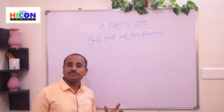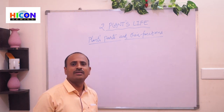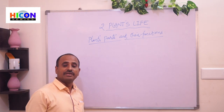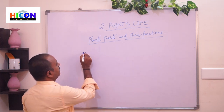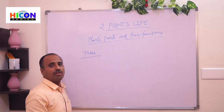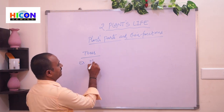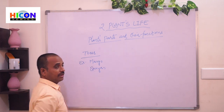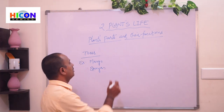Children, we have observed different types of plants in our surroundings. Some plants are very big, some plants are small, and some plants are very very small. Some plants are very big, like mango tree, banyan tree, neem tree, etc. Those plants which are very big are called trees. Small plants are called shrubs.